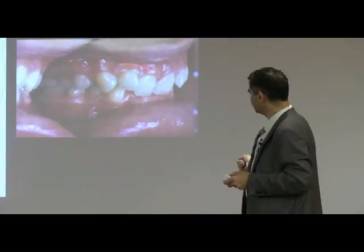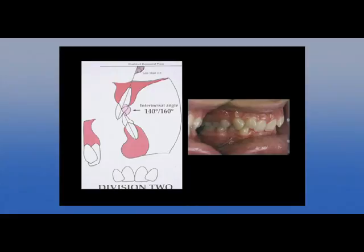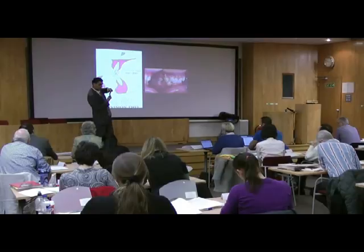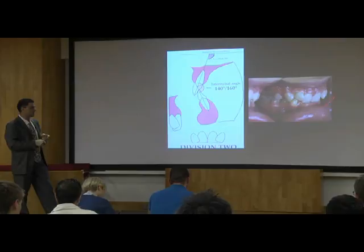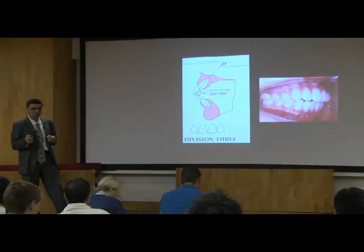This is a malocclusion where the upper incisors are under-torqued. That causes the dental division to increase — we're talking about an inter-incisal angle greater than 140 degrees. The goal of treatment in a patient like this is to correct the dental division from division 2 to division 1.